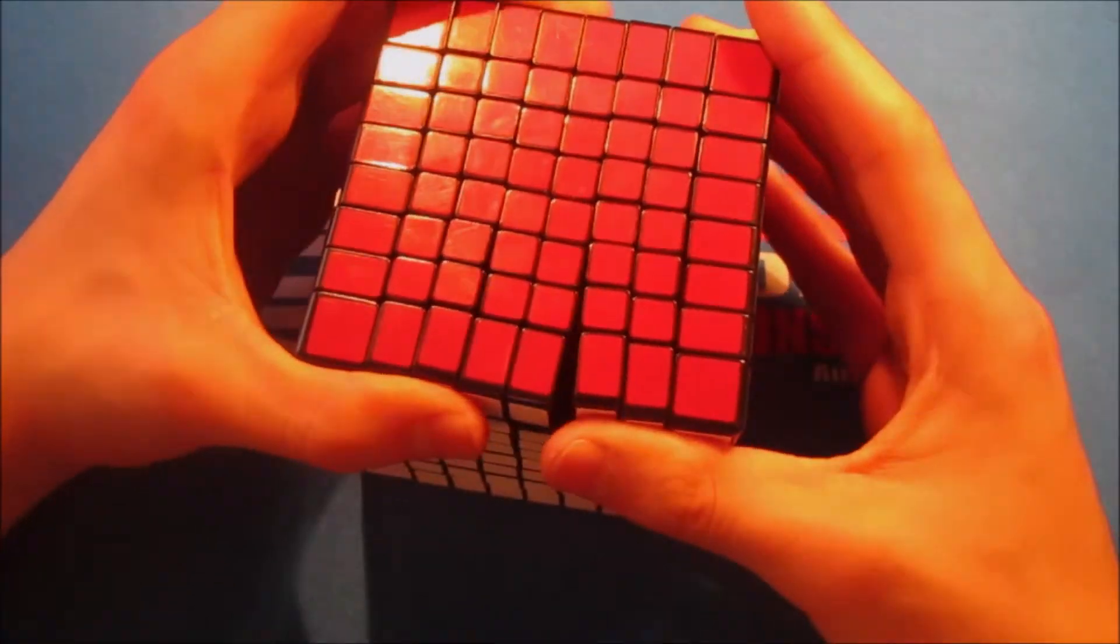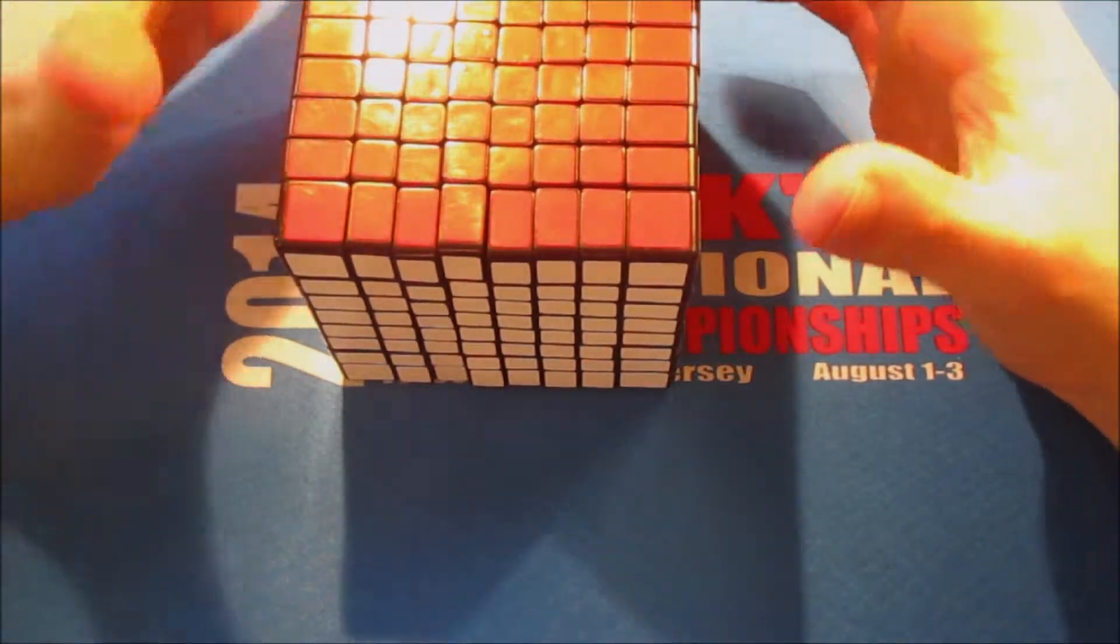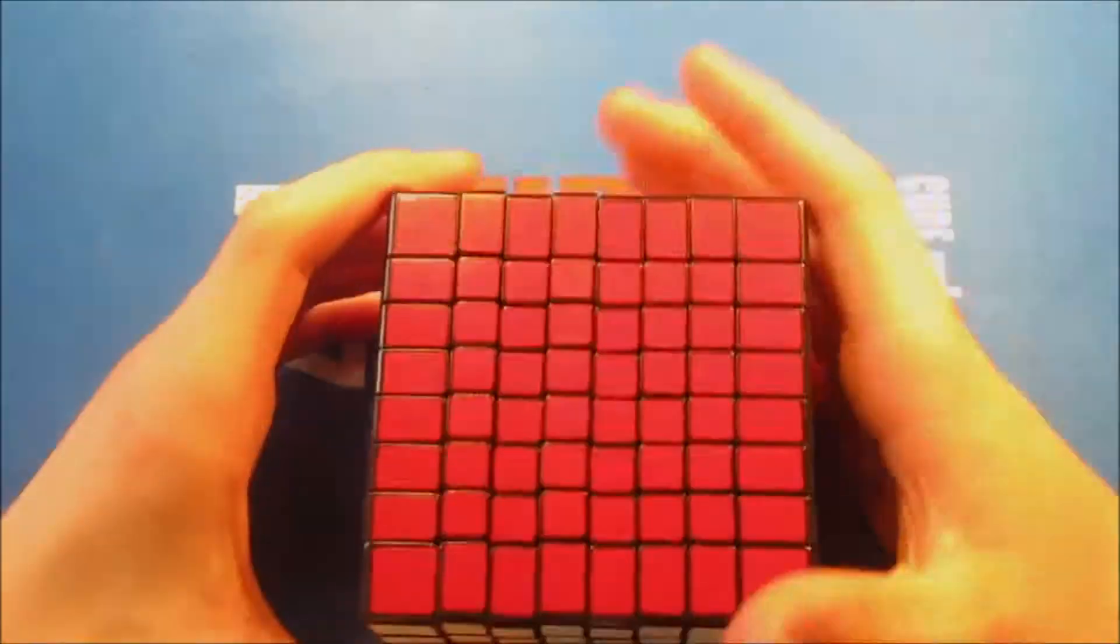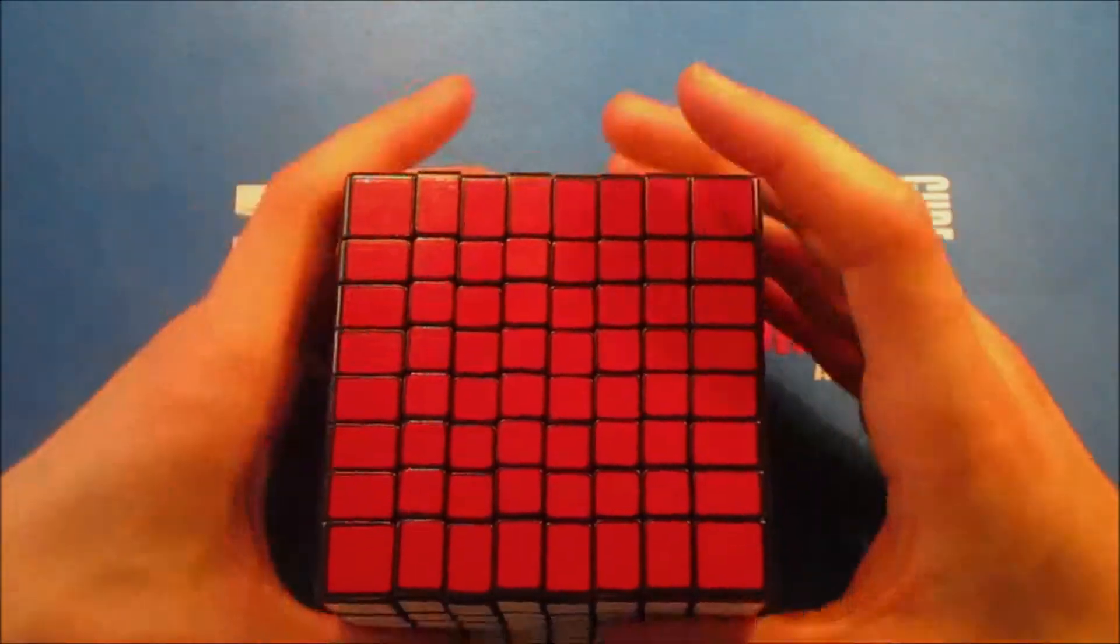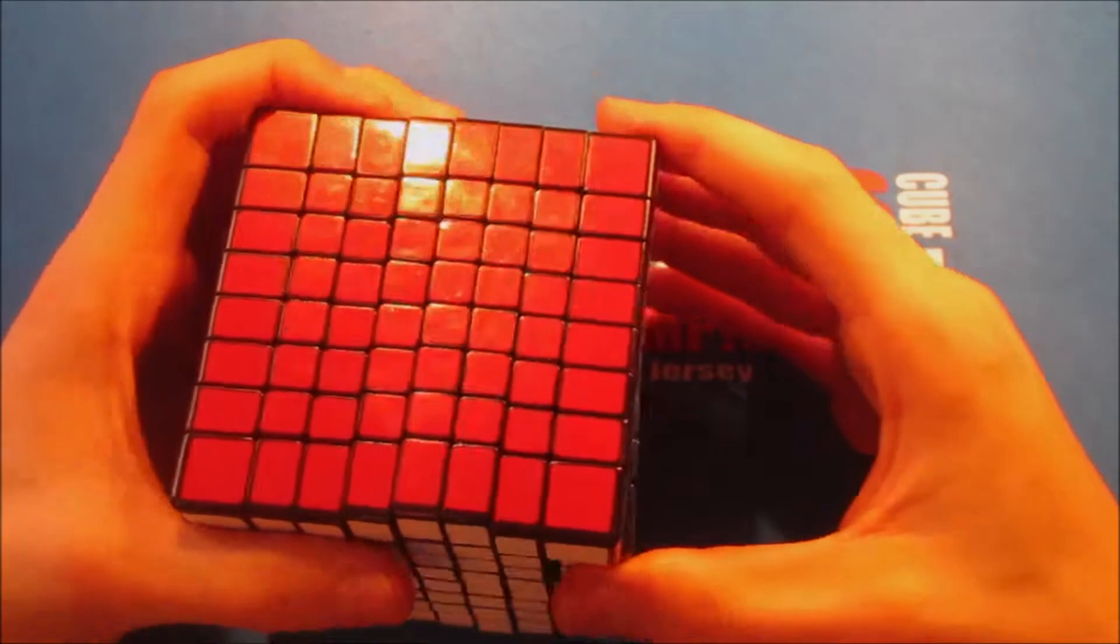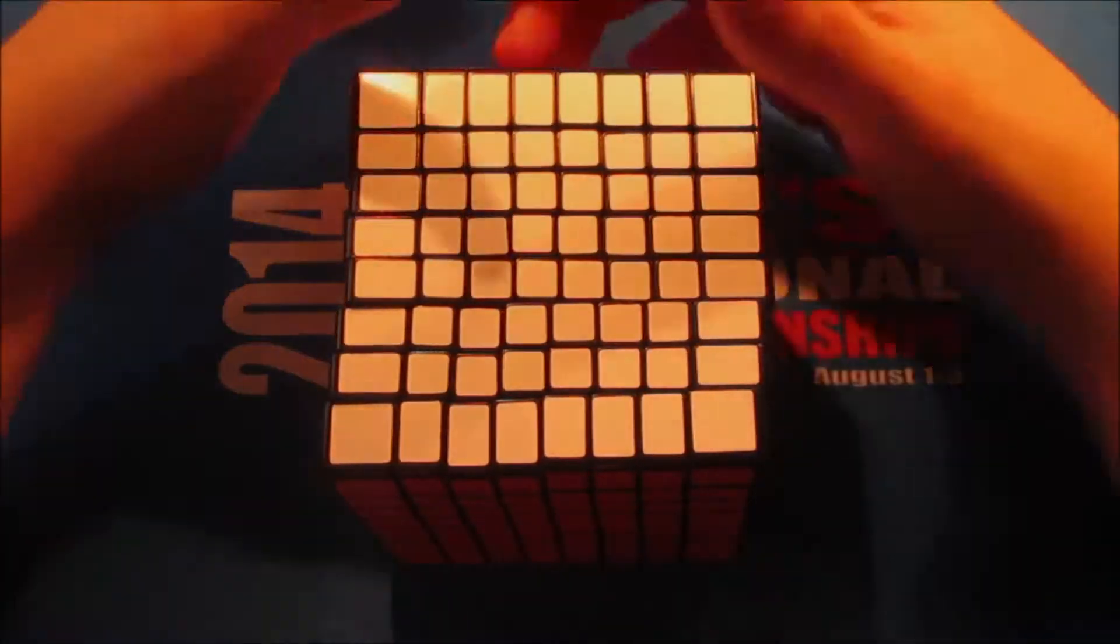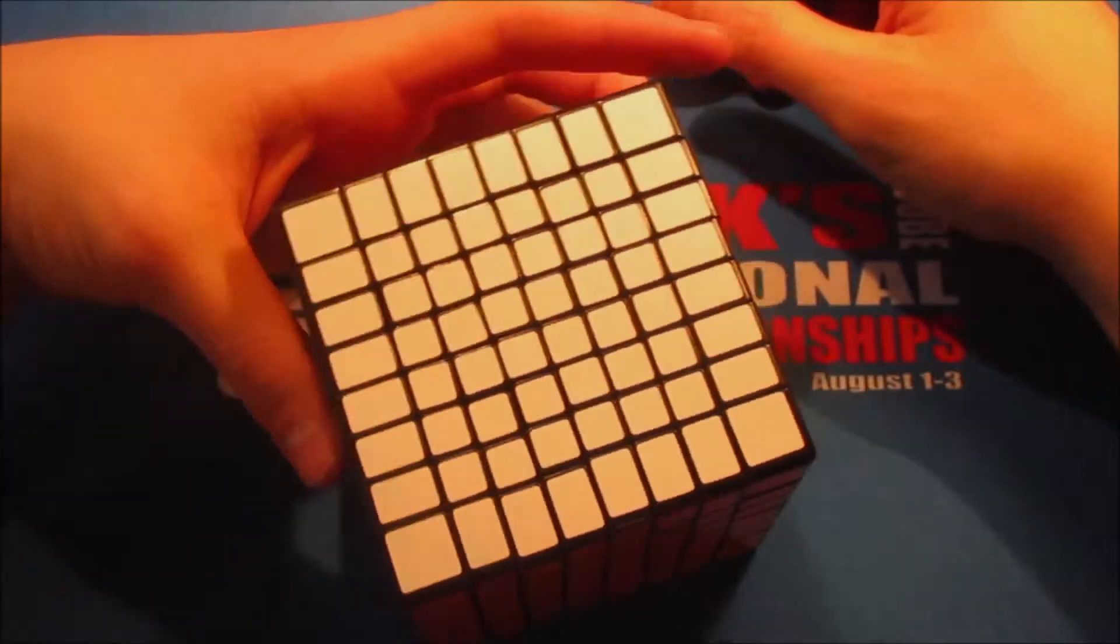Anyway, back to the review. The ShengShou 8x8 overall turns really nicely but again it feels really unstable at the exact same time. It pops a lot. My very first time getting this, I was testing corner cutting, misaligning everything to see how far it could corner cut, which it does, but I did it a bit too far and the whole thing just exploded and fell apart in my hands. I was mad. It took me like a couple weeks to figure out how to put it back together because I didn't look up any videos because I'm an idiot.